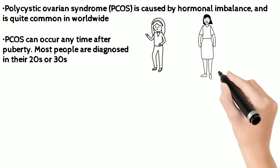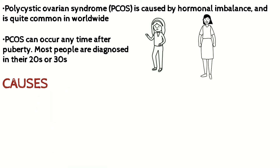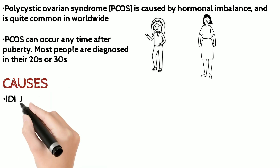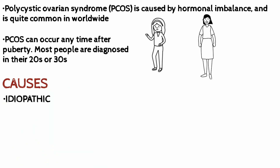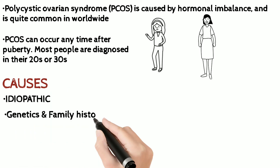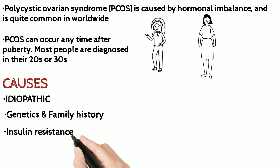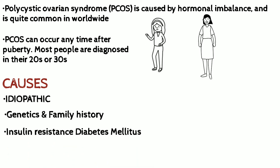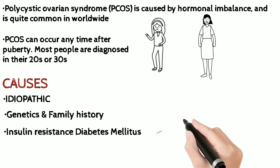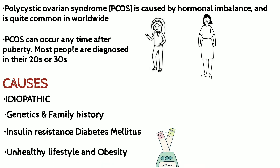Mostly PCOS is caused due to unknown or idiopathic reasons, though genetics and family history play an important role as well. Insulin resistance, diabetes mellitus, and being obese are major causes which have been noted in the majority of PCOS patients.